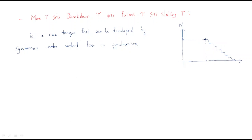In this session we will discuss about the maximum torque, also called breakdown torque, pullout torque, and stalling torque — all are the same meaning. Maximum torque means the torque will reach the maximum value. Breakdown means in that region the motor will break down. Pullout means it will pull out from synchronism, or stalling. These are the similar names for this torque.